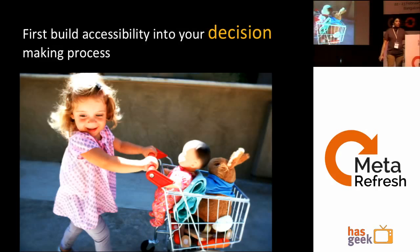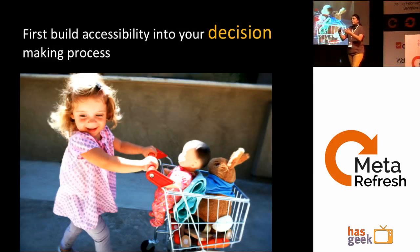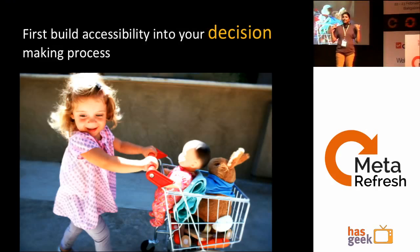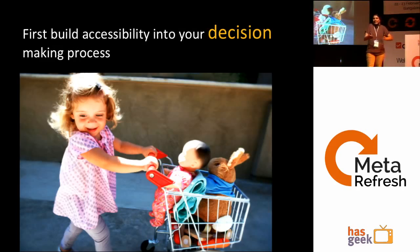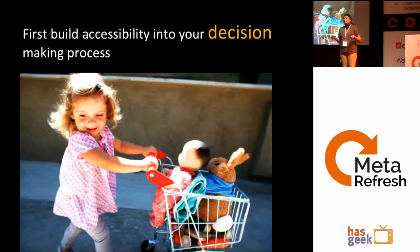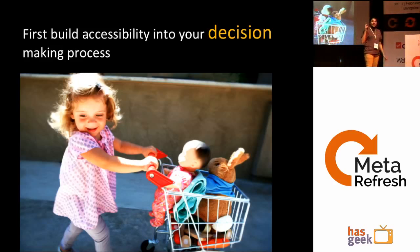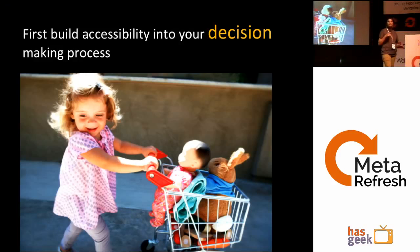Before even getting into standards and guidelines, accessibility should be in your mind — in your decision-making process. You should first think: I have to make things accessible. Not just because it's a mandate in some countries. That's why only government sites tend to be accessible. It should be in your mind before even thinking about the standards.